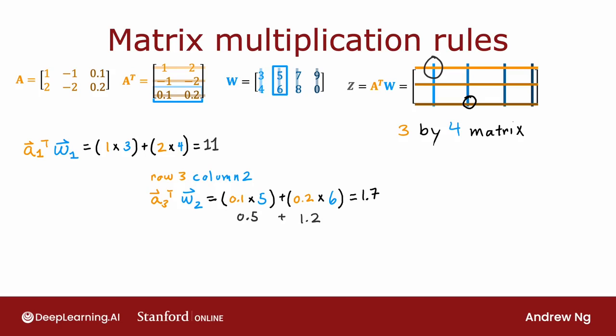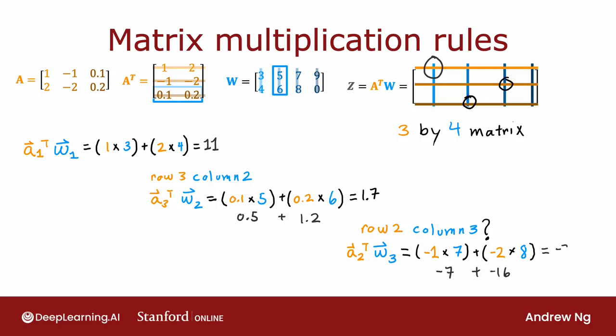So to compute the number in row 3, column 2 of Z, you grab row 3 of A transpose and column 2 of W. Let's look at one more example — row 2, column 3 of matrix Z. See if you can figure out which row and column to grab and dot product together. You should be grabbing row 2 of A transpose and column 3 of W. That gives −1 × 7 + (−2) × 8, which is −7 + (−16), equal to −23.